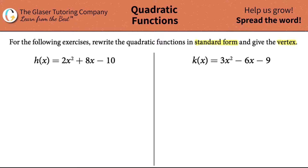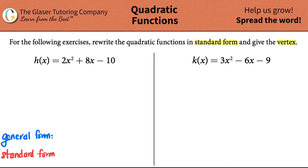We should know and memorize that there are two different formulas for quadratic functions. There's a general form and there is the standard form. The general form is the one you're probably going to see most often. This one is ax squared plus bx plus c, where a, b, and c are all number values. You have an x squared value, then an x value — that is the general form.